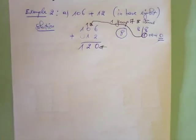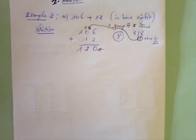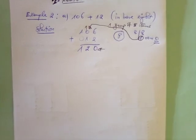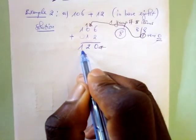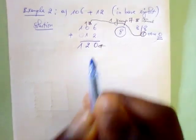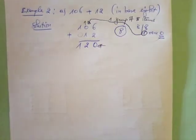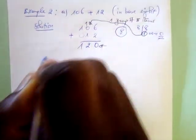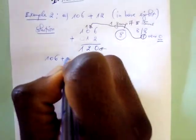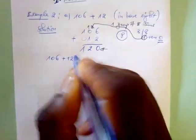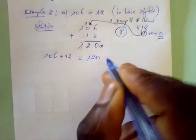Our answer is 120 in base eight. That means 106 plus 12 equals 120, within base eight.